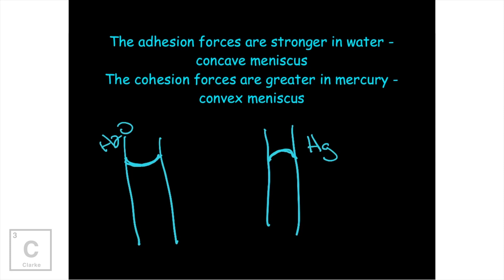So we have this convex meniscus because the adhesion force is stronger than the cohesion force. So it's grabbing on here stronger. But in mercury, the cohesion force is the strongest. So that's why you're going to get this bubble in the middle. It's kind of crazy. I know.